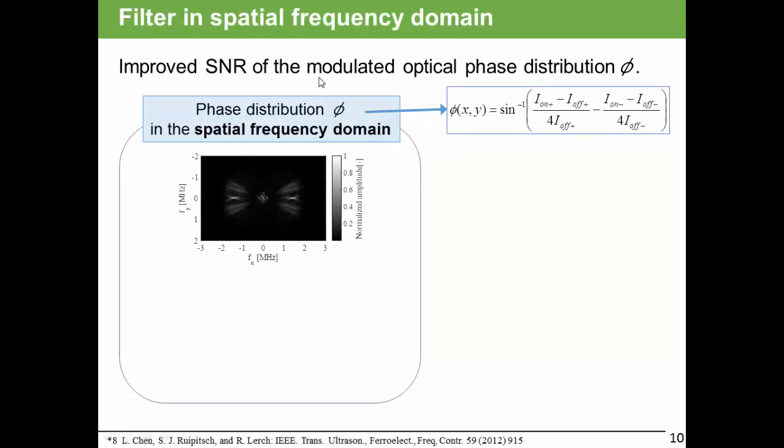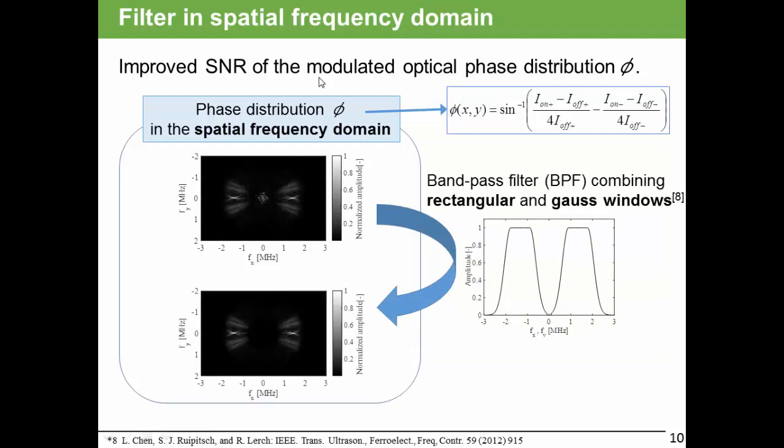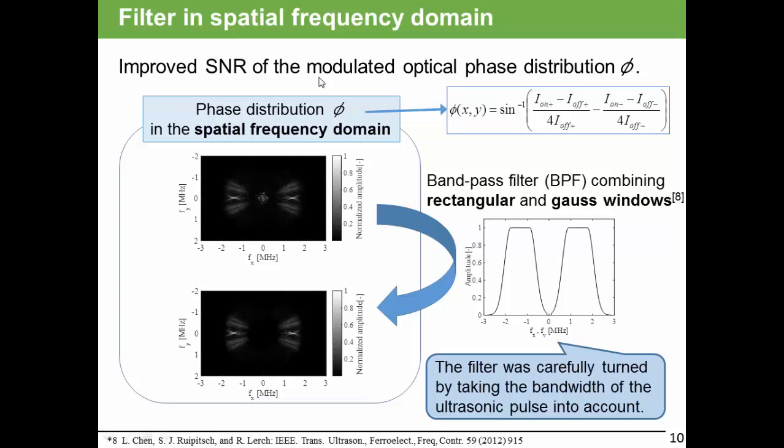I will explain a filter in spatial frequency domain to improve SNR of the modulated optical phase distribution. In the spatial frequency domain, a band-pass filter combining rectangular and Gaussian windows was applied to phase distribution. The filter was carefully tuned by taking the bandwidth of the ultrasonic path into account.